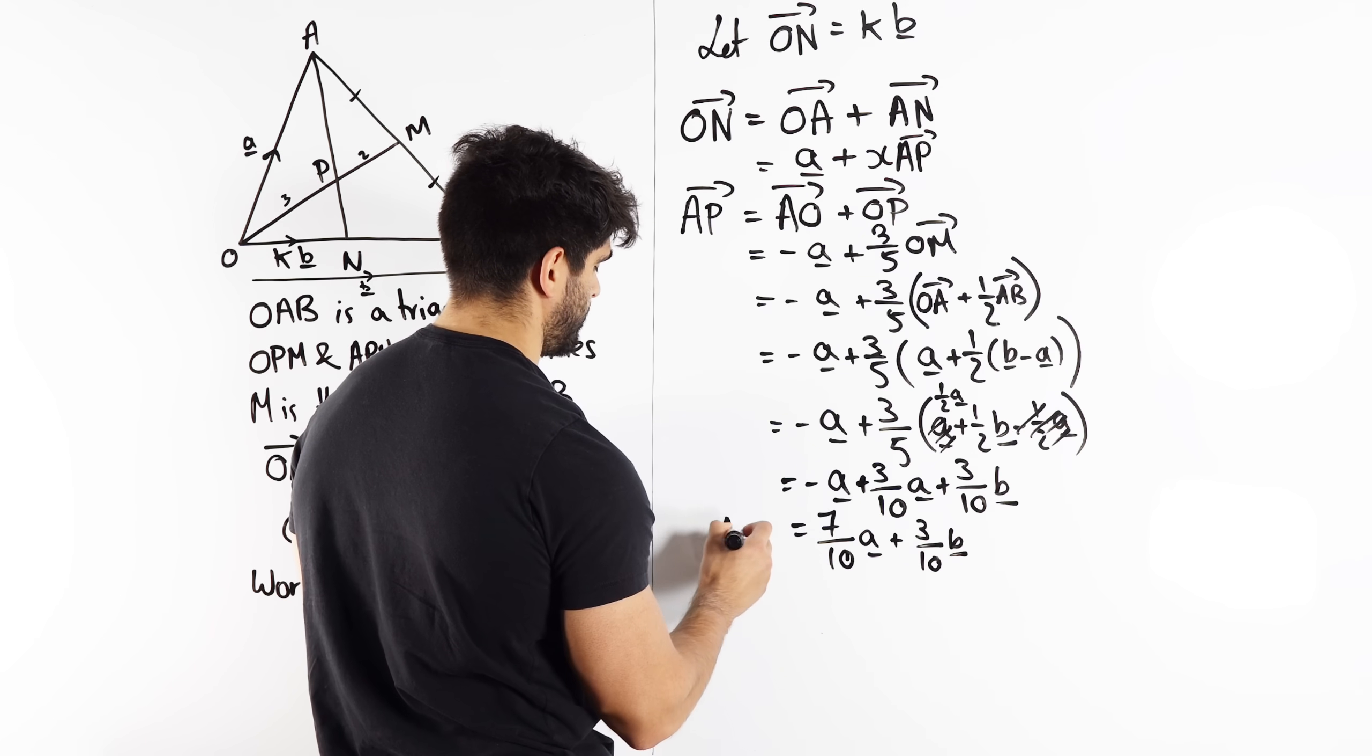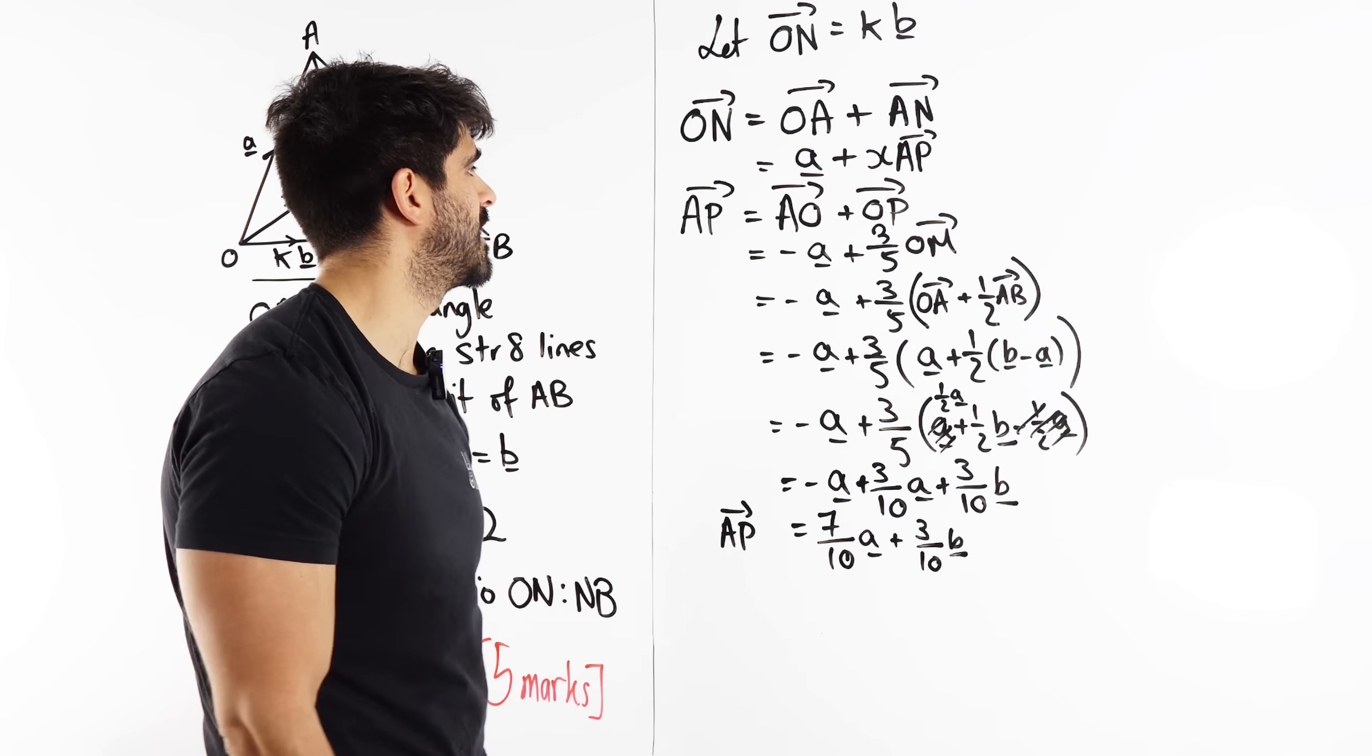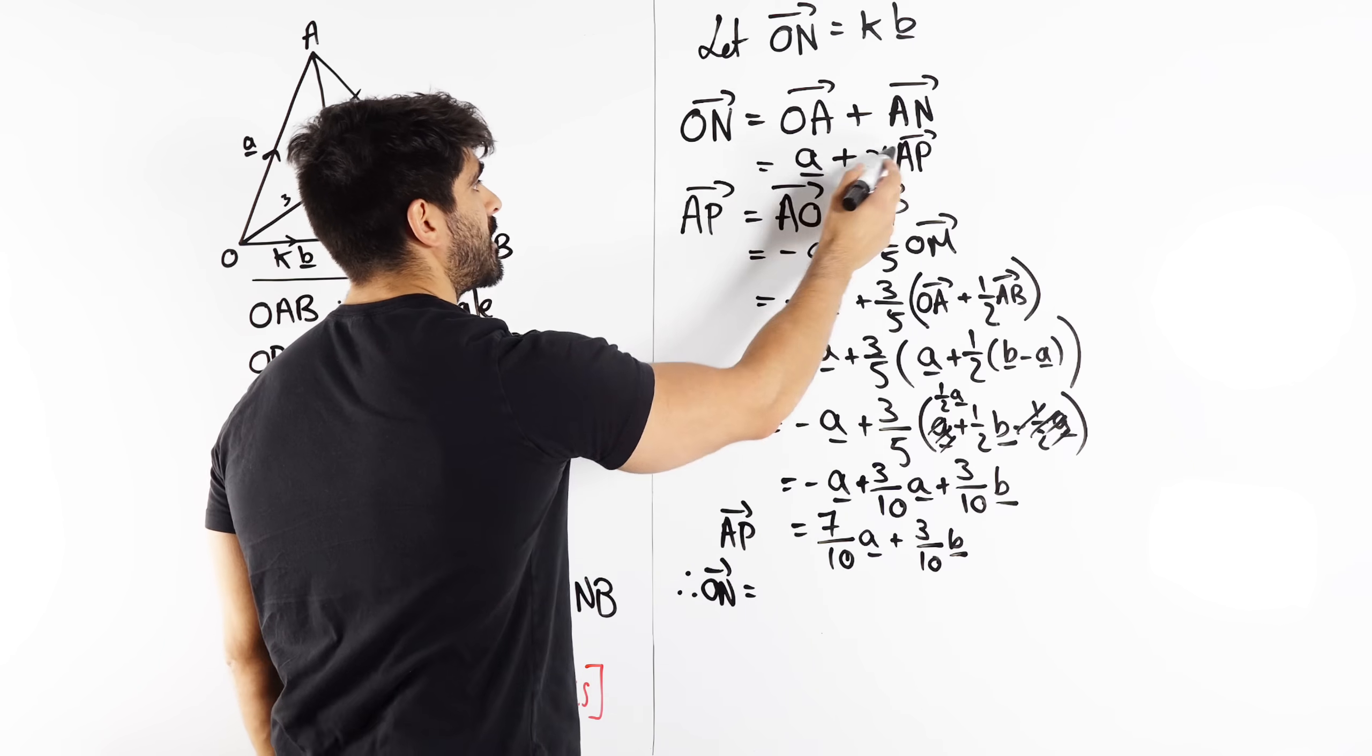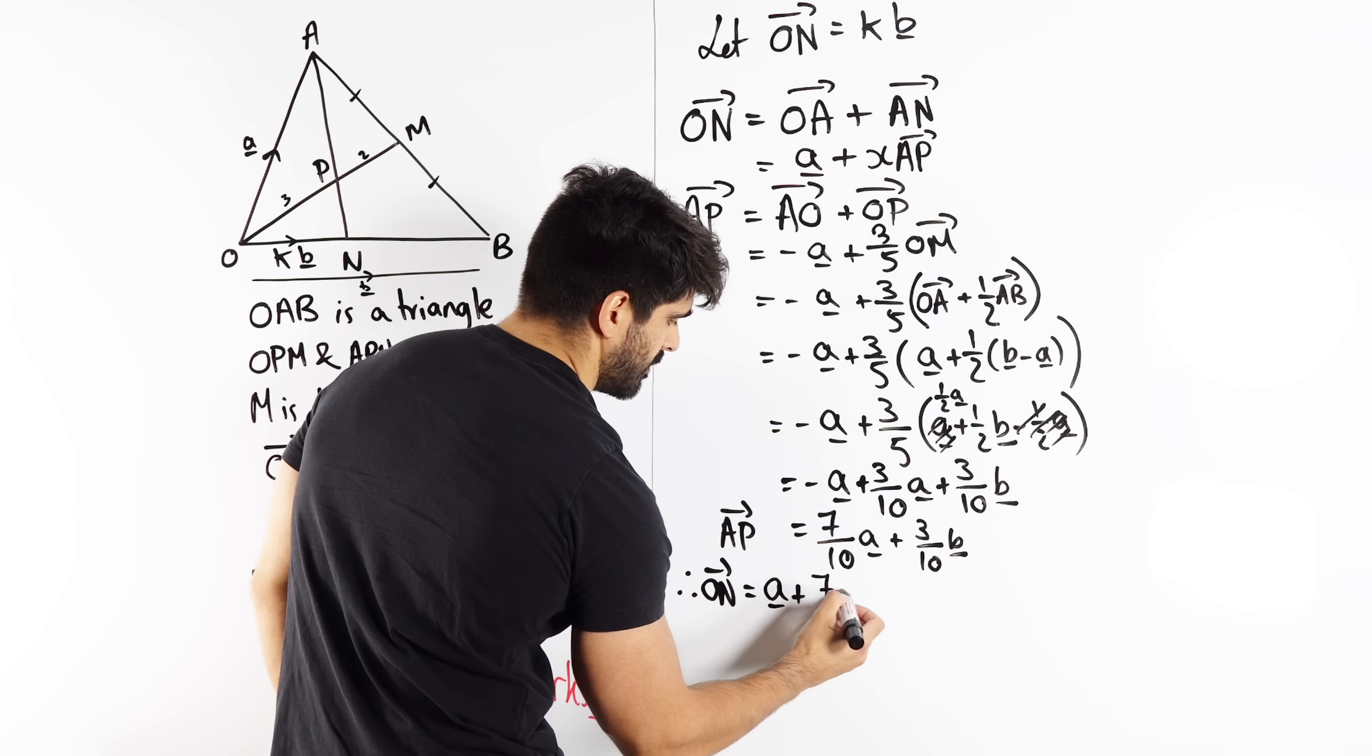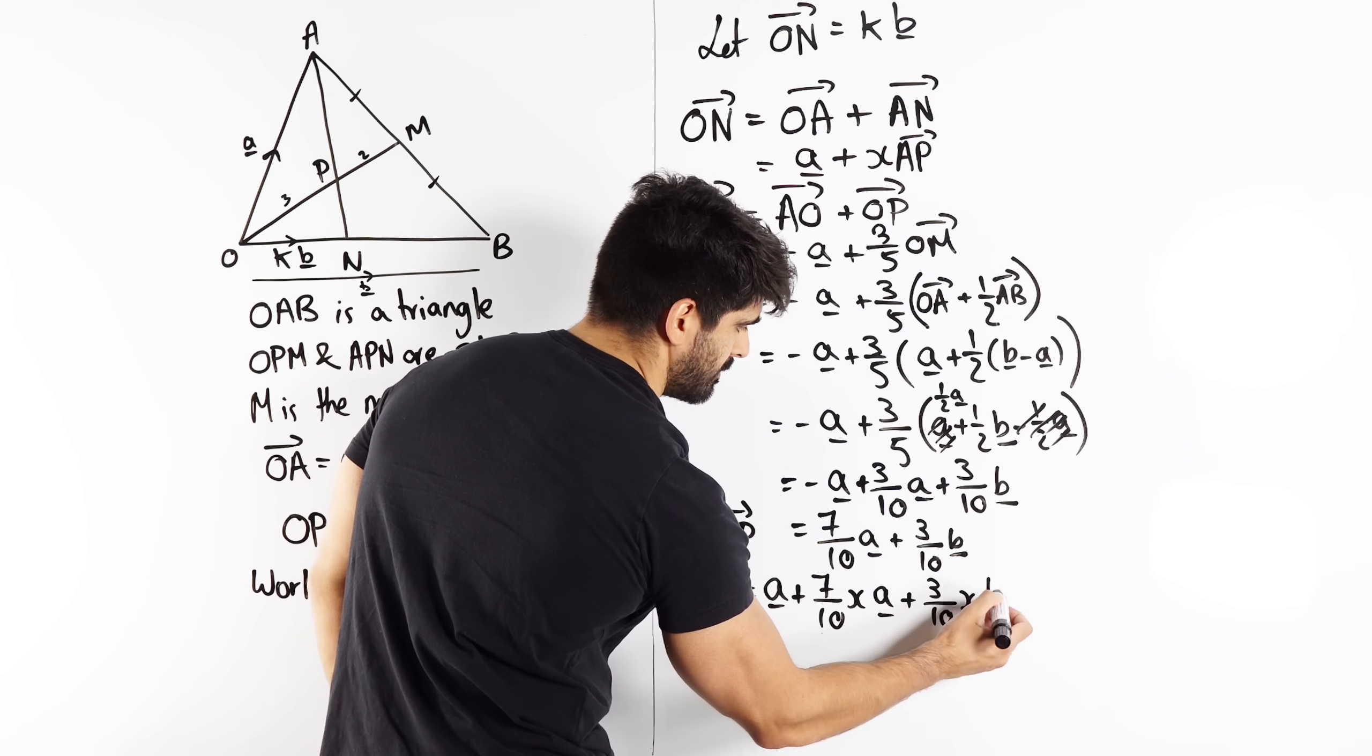Now that's just A to P. So A to P is going to go here. Now we can find O to N. So therefore, ON is A plus X lots of all this. So we'll get minus seven over ten X A, and three over ten X B.